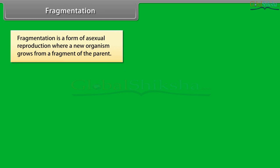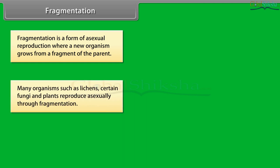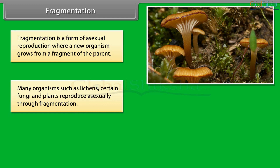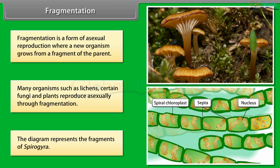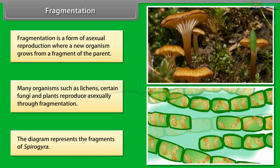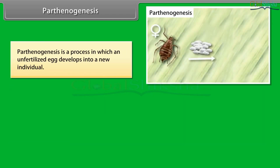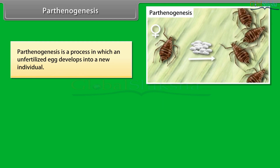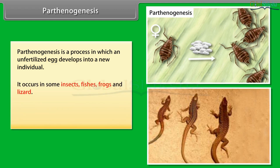Fragmentation is a form of asexual reproduction where a new organism grows from a fragment of the parent. Many organisms such as lichens, certain fungi, and plants reproduce asexually through fragmentation. The diagram represents the fragments of Spirogyra.